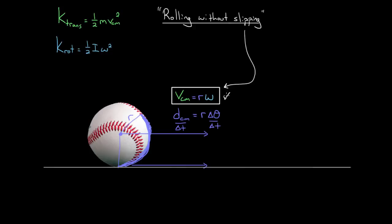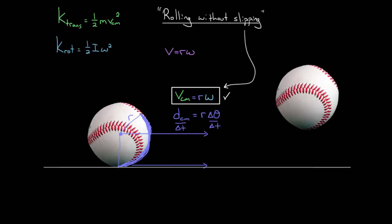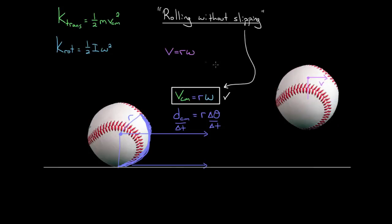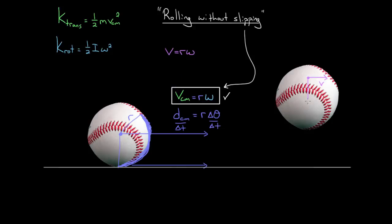You might think we already knew that v = rω. We did, but this is different. The v we just derived is the speed of the center of mass. The v we knew before was talking about the speed of a point on the object at distance r from the center, relative to the center of mass. This new equation tells us how fast the center of mass itself is going — not just how fast a point on the baseball moves relative to the center of mass. This gives us a way to determine the speed of the center of mass, and that's really useful in a whole class of problems.